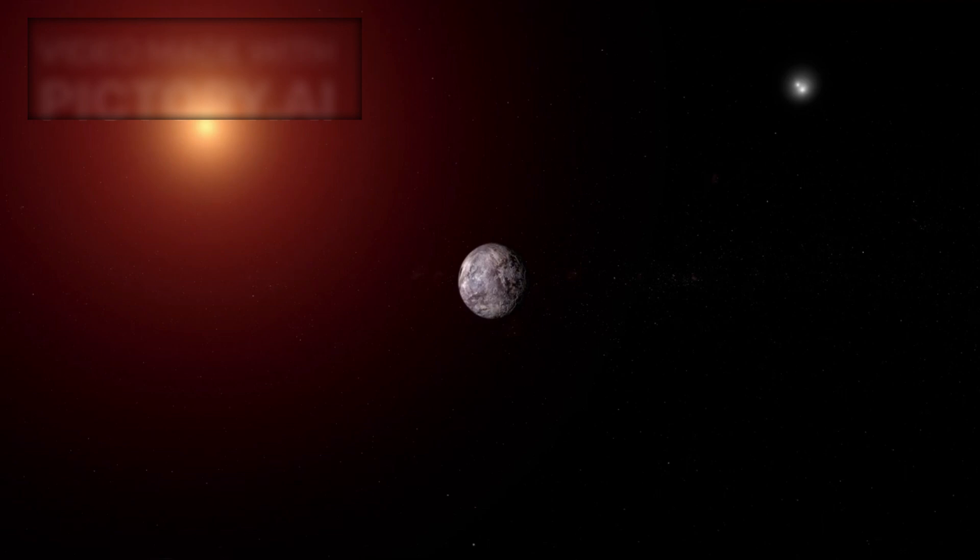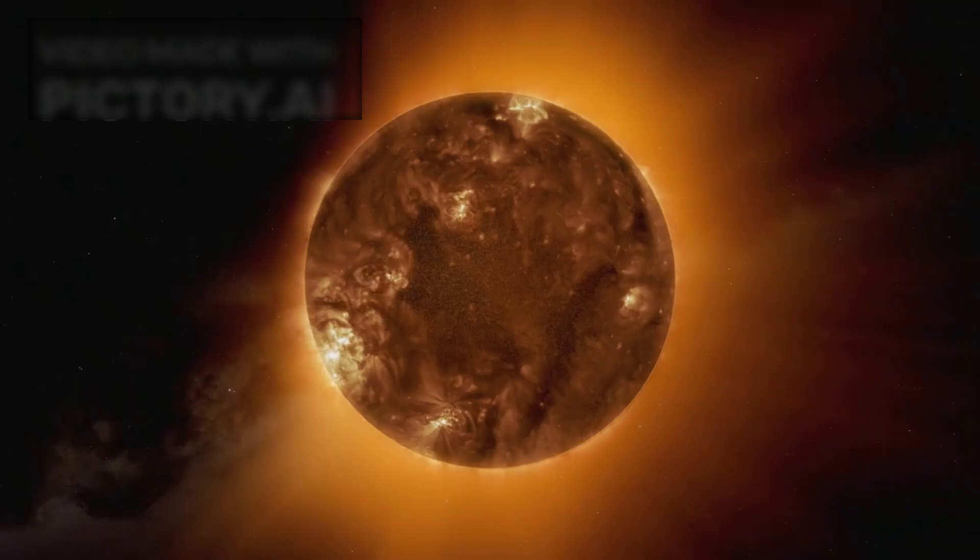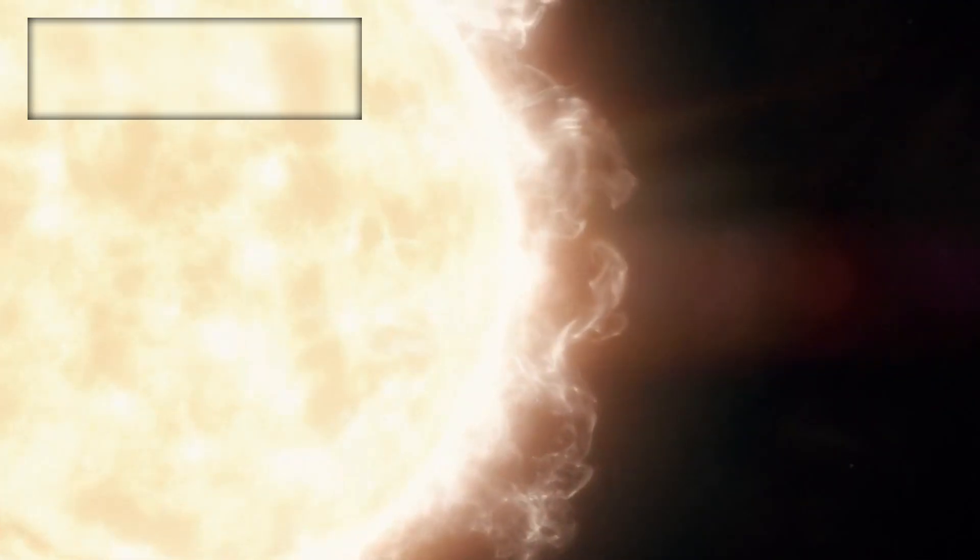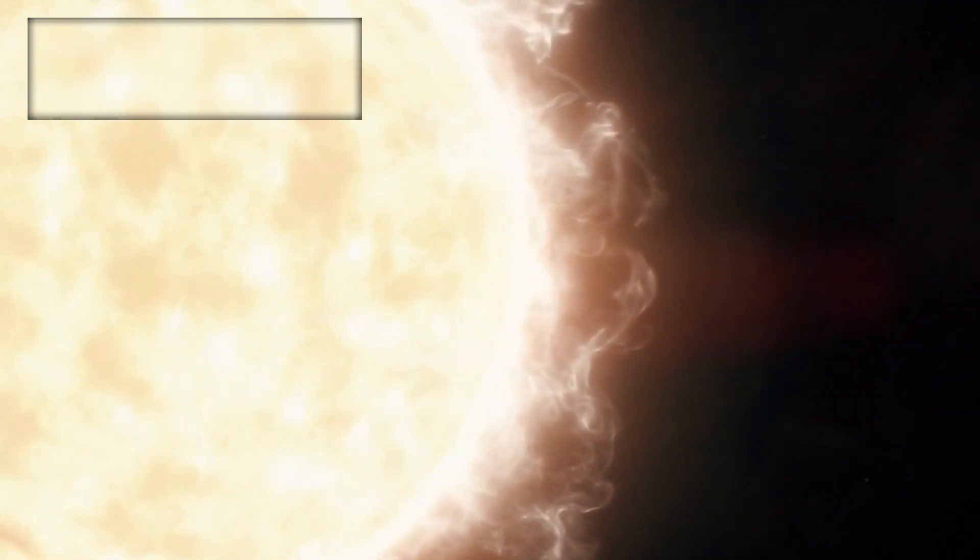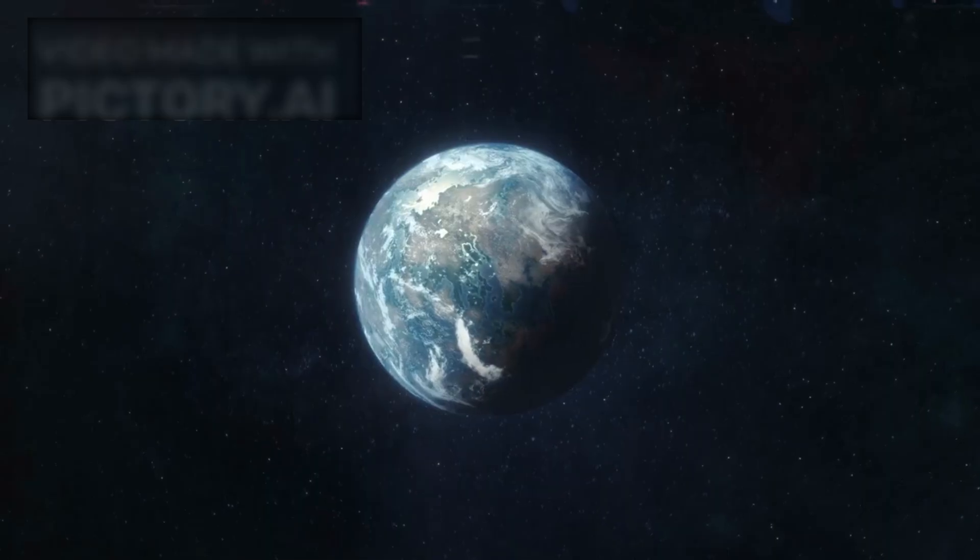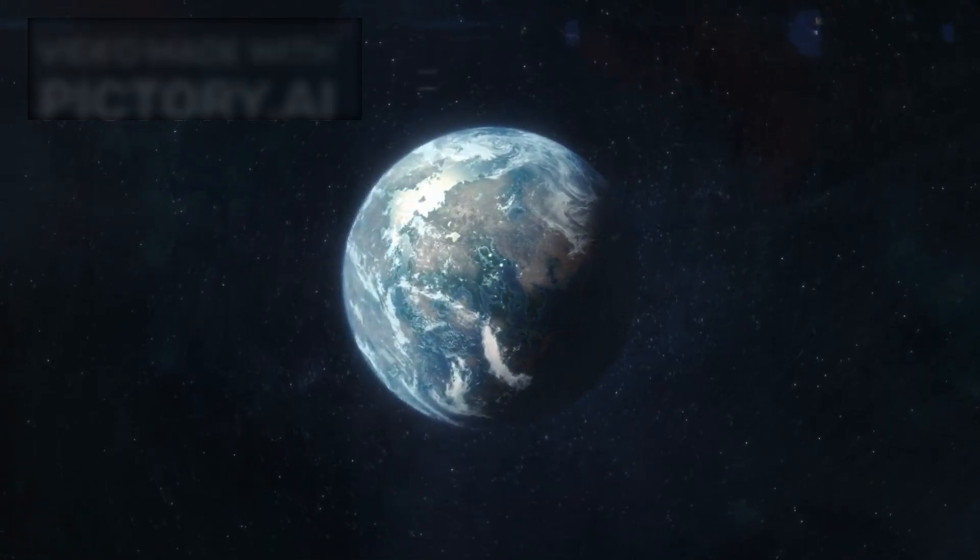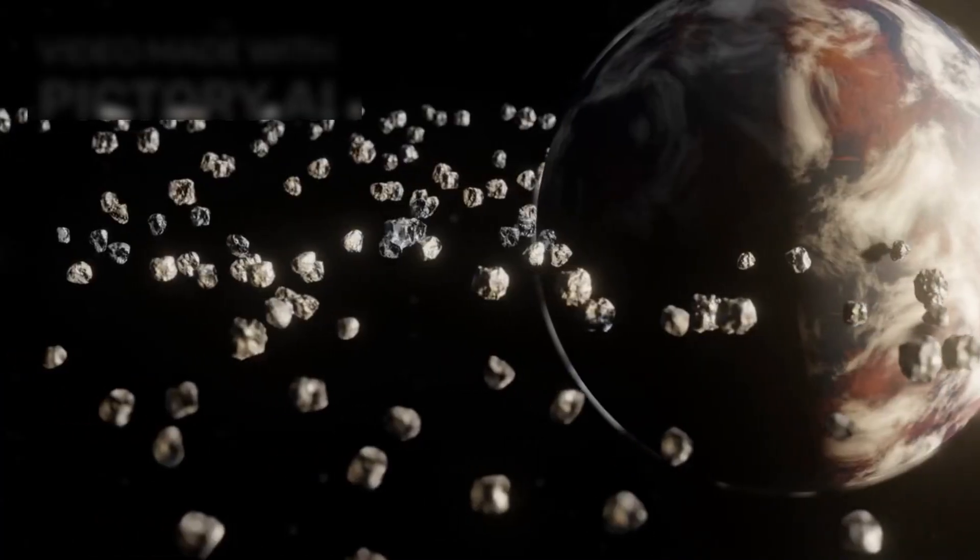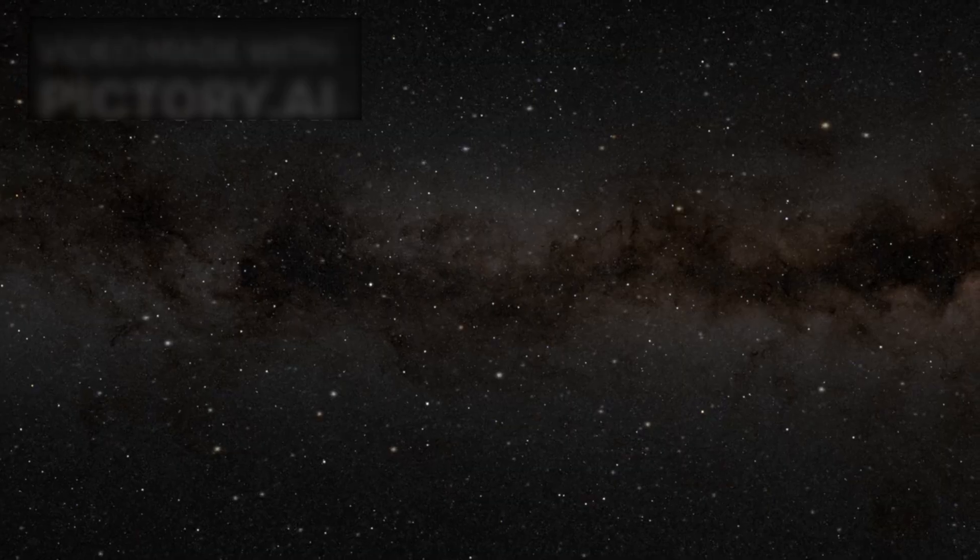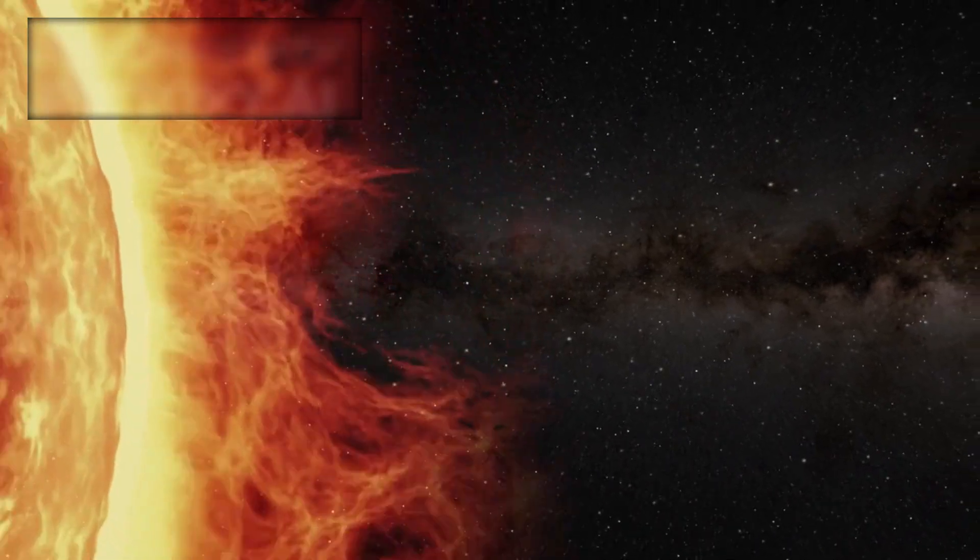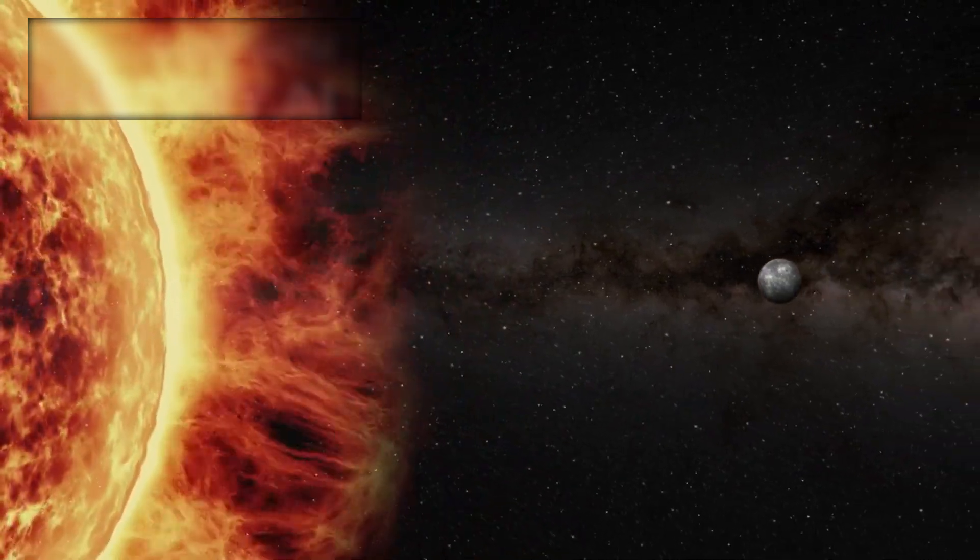Proxima b orbits a red dwarf, a type of star known for its volatility. It's not the friendliest sun. Flares erupt often, bombarding the planet with radiation. But despite this, the planet remains one of the most Earth-like candidates in our cosmic neighborhood. It has a rocky surface. It sits in the star's habitable zone, the delicate region where liquid water might exist.